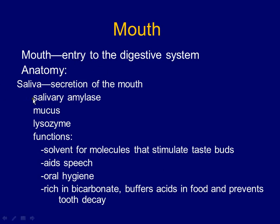So what's in saliva? The first component is salivary amylase — an enzyme that breaks down carbohydrates. When you put a cracker in your mouth, amylase comes out and starts breaking apart starches into little sugars so you can start tasting sweetness. Even though saliva is a secretion, amylase is also performing digestion — it's the first step in carbohydrate digestion.